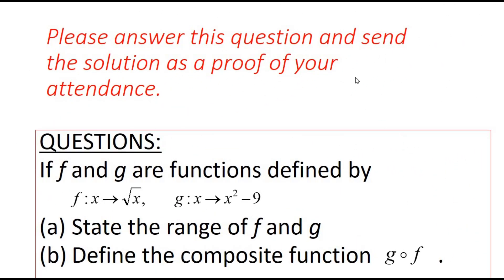Please answer this question and send the solution as proof of your attendance. Given that f maps x to √x and g maps x to x² − 9, state the range of f and g, and define the composite function g∘f.